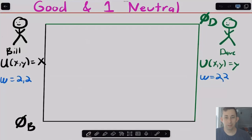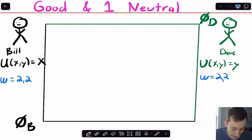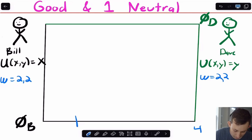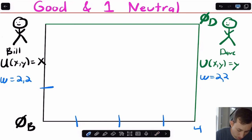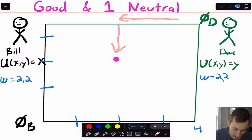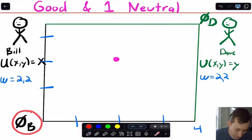Let's get into it with one good and one neutral. We've got Bill and Dave: Bill has a utility function where he just likes X, and Dave has a utility function where he just likes Y. The endowment is 2,2. Remember, on the Edgeworth box with two and two we've got four goods total — so on the x-axis that's one, two, three, four, and on the y-axis also one, two, three, four. For every good that Bill has, Dave has less.